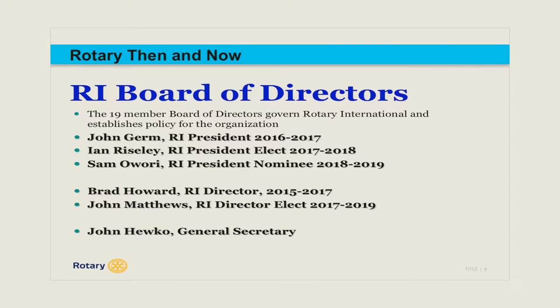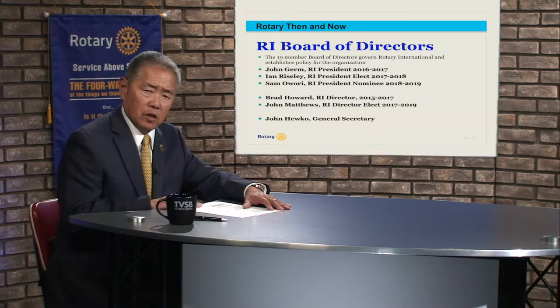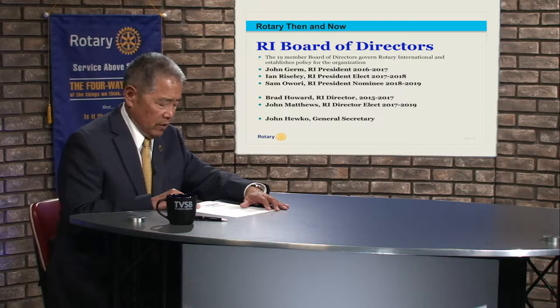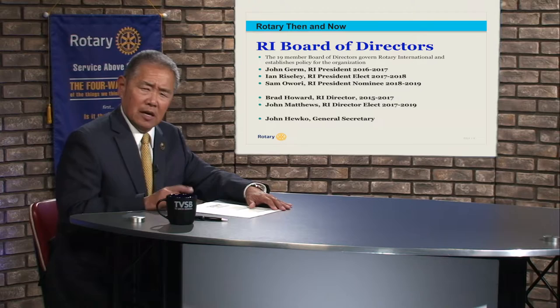We also have the president-elect, Ian Risley, who is from Australia. I've had the opportunity to work with both John Germ and Ian Risley. Ian Risley's focus has been international peace and peace efforts, and he's been very instrumental in peace initiatives through Rotary and beyond. He will serve in 2017–2018. Recently announced is Sam Awari as the president nominee — Sam is from Uganda, and his presence at the international level has been largely in working with the Rotary Foundation on humanitarian projects and programs.